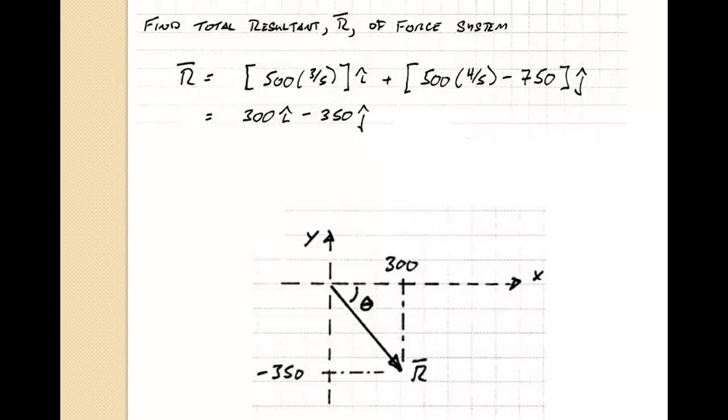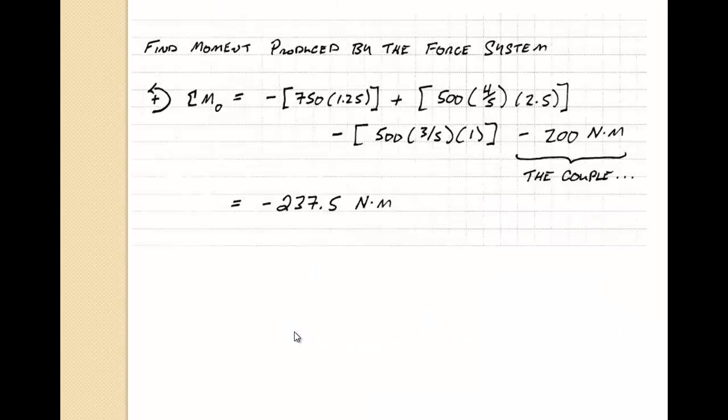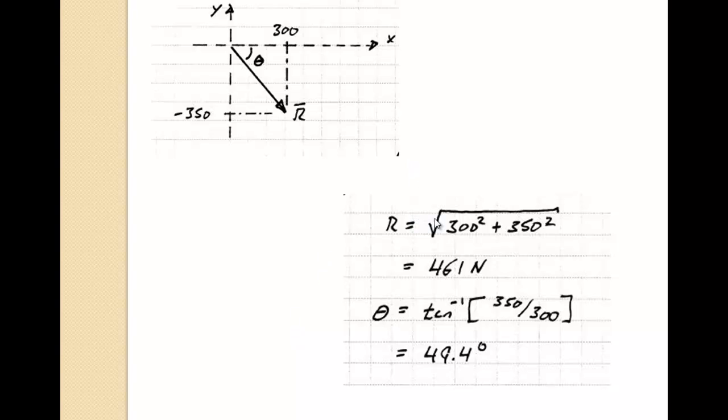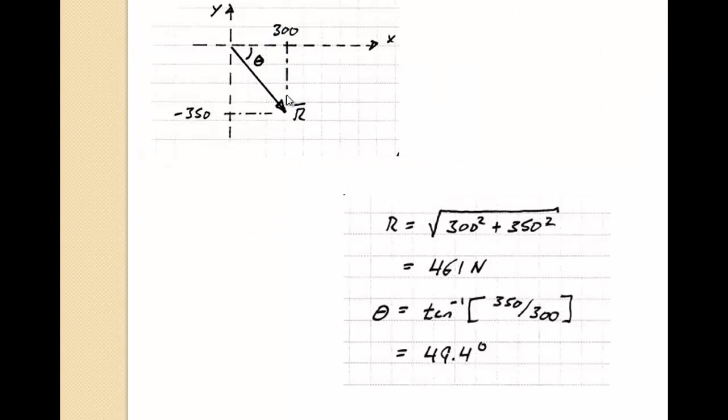And of course, we can draw it in as a resultant force, a magnitude, and an angle. And the way we're going to do this is the resultant force comes from taking the square root of the sum of the squares. So 300 squared plus 350 squared, taking the square root, we get 461 newtons. And we're going to get the angle by taking the arc tangent. So the tangent is the opposite over the adjacent. And the opposite side is 350, the adjacent side is 300. So we do that calculation and we come out to 49.4 degrees.